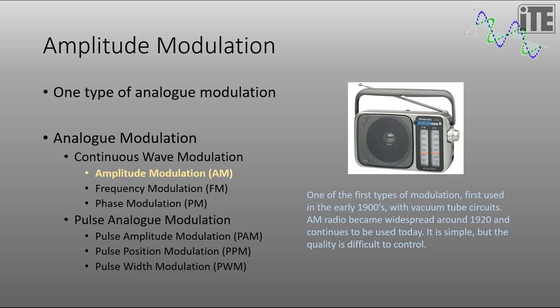It is one of the first types of modulation discovered, first used in the early 1900s with vacuum tube circuits. AM radio became widespread around 1920 and continues to be used up until the present day. It is very simple, but the quality is difficult to control.